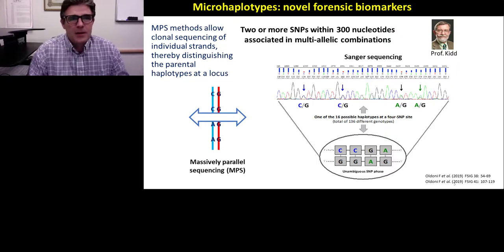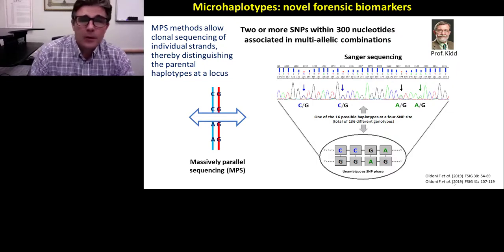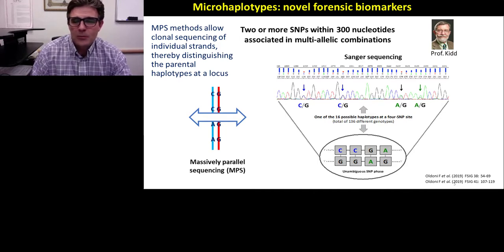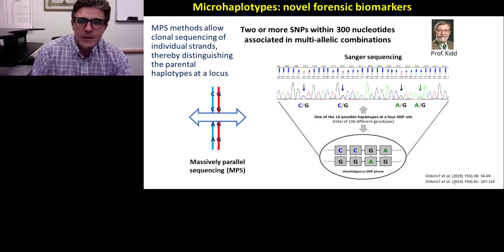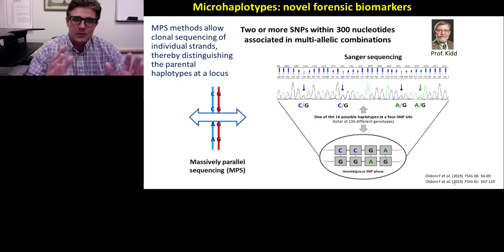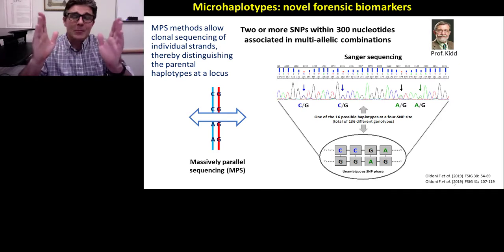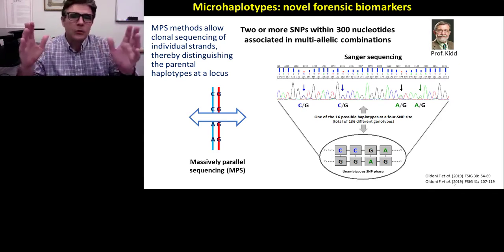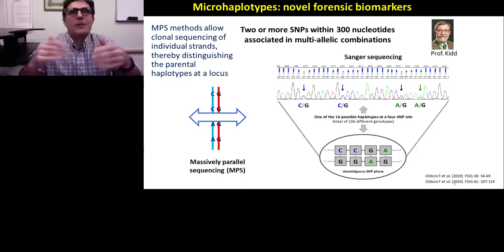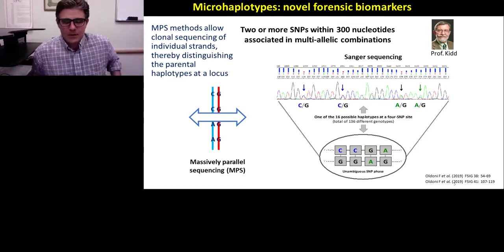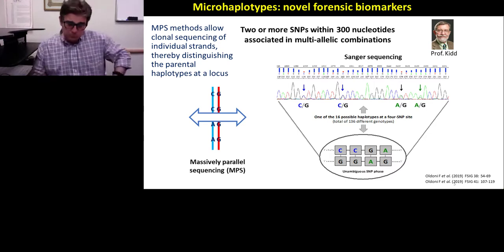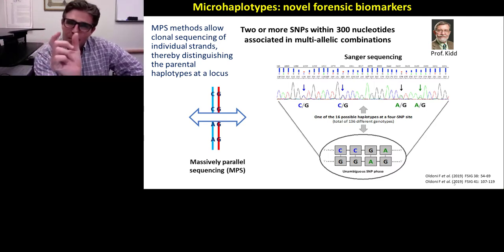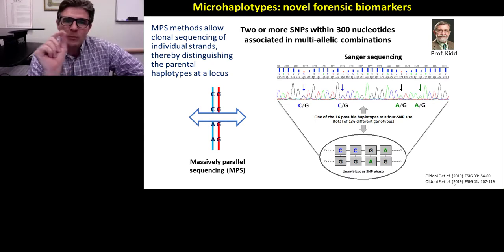This is where microhaplotypes come in. Microhaplotypes are a novel forensic DNA marker initially conceived by Professor Ken Kidd from Yale University. They are a set of SNPs within an amplifiable fragment of approximately 300 nucleotides or less. The smaller these fragments, the greater their sensitivity in degraded DNA, and within each fragment there are multiple SNPs.